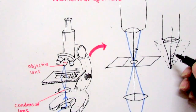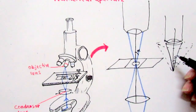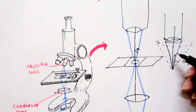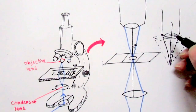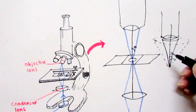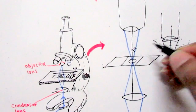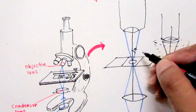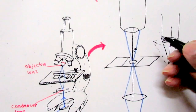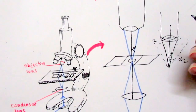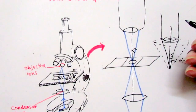In later videos we will see that numerical aperture is very important for the resolution of a microscope. We can also increase the numerical aperture by using the oil immersion lens for higher magnification, and we will cover these things in later videos.